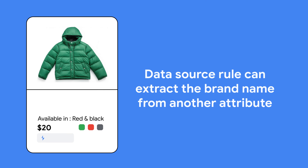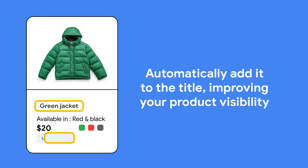Here are some examples. Say your product titles are missing brand information. A data source rule can extract the brand name from another attribute like brand or manufacturer, and automatically add it to your title, improving your product visibility. Another example is standardizing product type values.